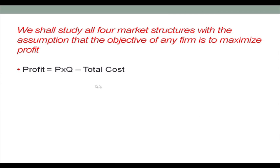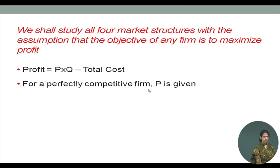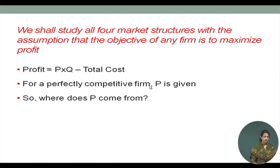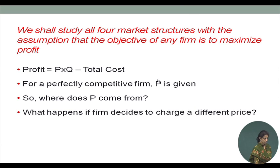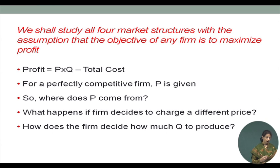Profit is total revenue minus total cost. Total revenue is price multiplied by quantity, and for a perfectly competitive firm, P is given — that was our assumption that price is given. But where does this price come from? What happens if the firm decides to charge a different price? Once we understand the pricing, we will ask how the firm decides how much output to produce.